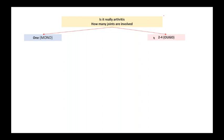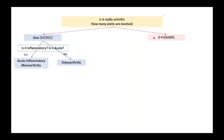But if you are dealing with one, then the next question you ask is it inflammatory and is it acute? If you get the answer no, then you are largely dealing with an osteoarthritis or a degenerative arthritis which is non-inflammatory in nature. If the answer is yes, then obviously you are dealing with an acute inflammatory monoarthritis.